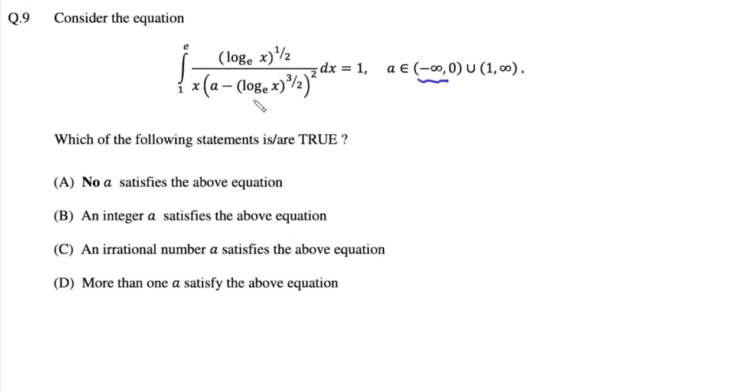Now clearly looking at this we have log x to the power three by two and then we have log x to the power one by two and one upon x. So what we'll do is we'll let a minus log x to the power three by two as some t.